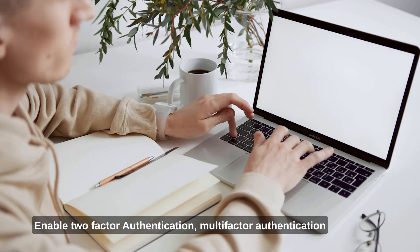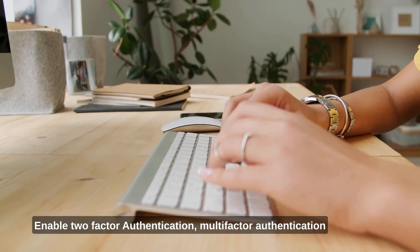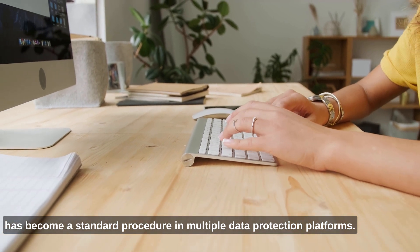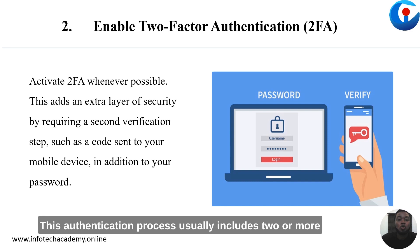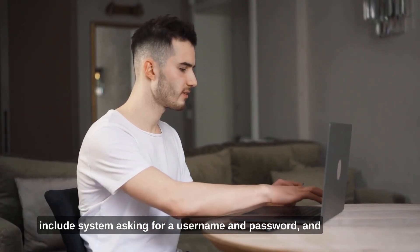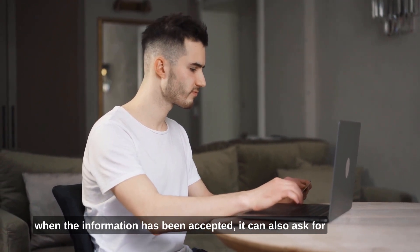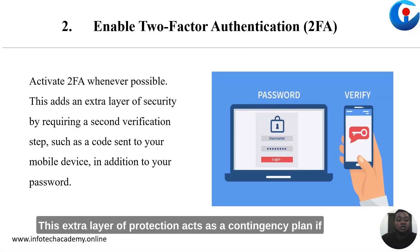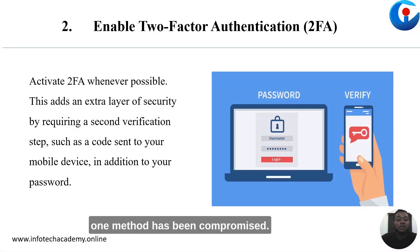Enable two-factor authentication. Multi-factor authentication has become a standard procedure in multiple data protection platforms. This authentication process usually includes two or more verification procedures that can include what you know and what you have. For example, a two-factor authentication may include the system asking for a username and password, and once accepted, it can also ask for a fingerprint scan. This extra layer of protection acts as a contingency plan if one authentication method has been compromised.